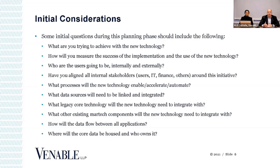What core legacy technology can you integrate initially or use going forward? What other new technology components do you need to get? How will data flow from both in-house and newly procured applications offered by different providers? You're mapping this out. These questions can become quite technical, which is why we emphasize the need for bringing in that IT resource early. And finally, where will the data be housed? Storage and security is critical. You will likely need to own these things, but occasionally you might be using a third-party host server. Where will the server be located? Who will have access? What controls for security are in place? These are all questions you need to consider upfront.